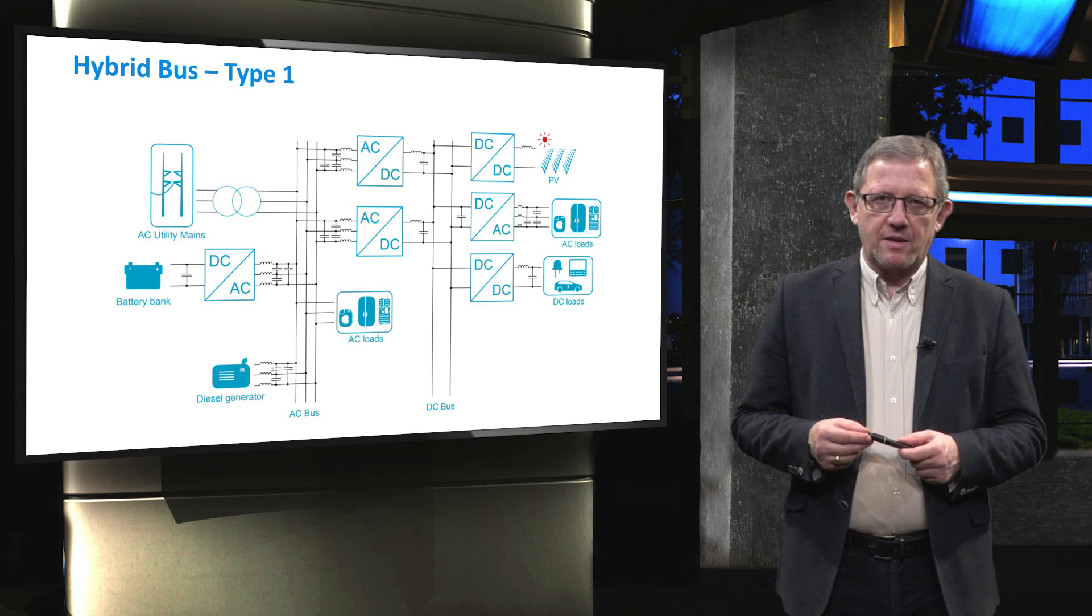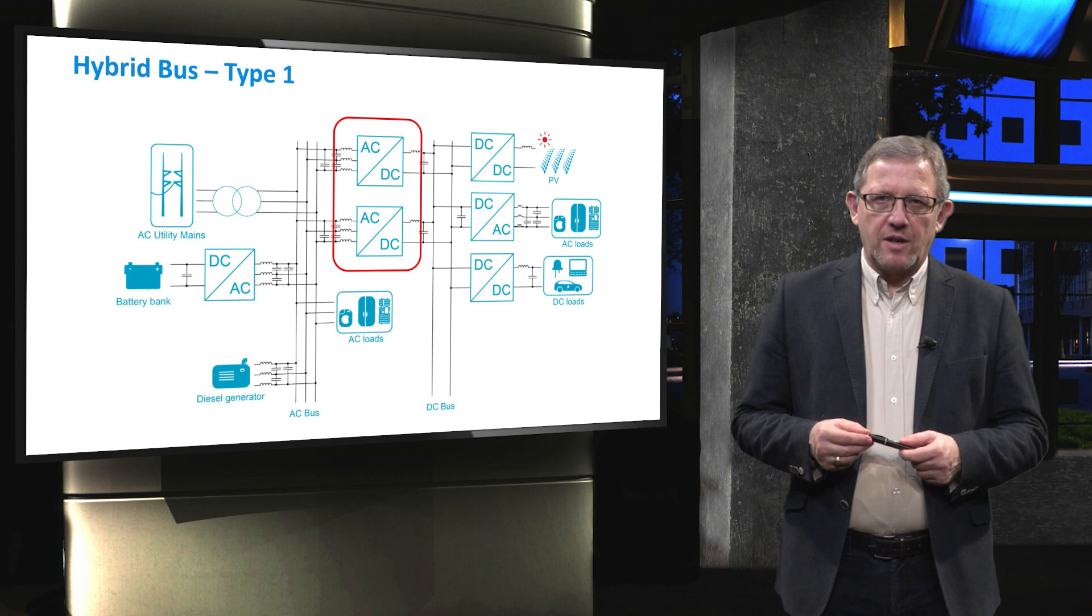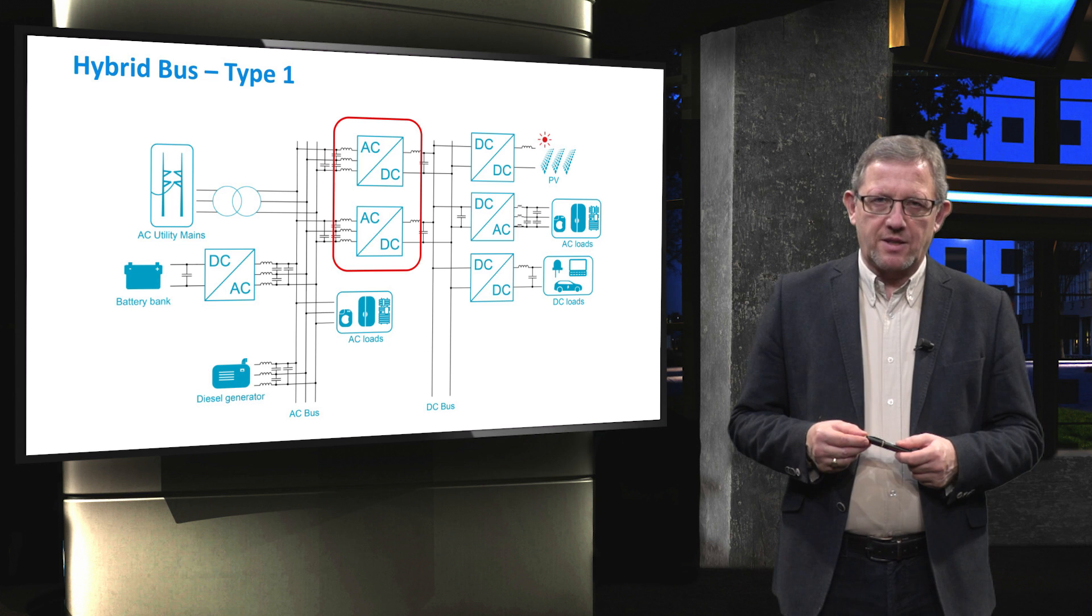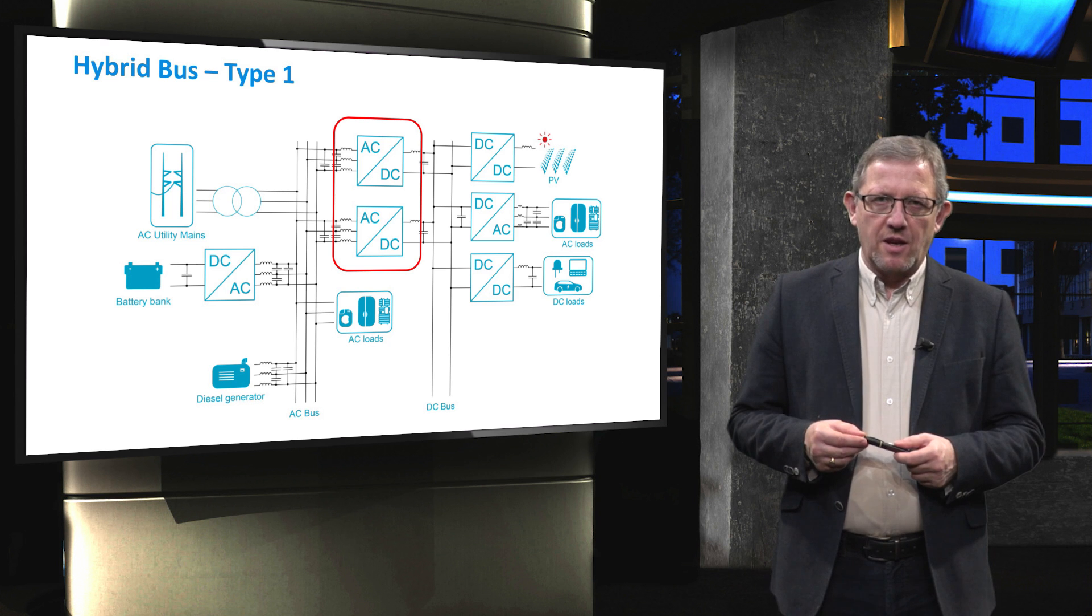The first type of hybrid bus is shown on the slide. The hybrid layout typically consists of one or more DC links connected to the AC ones. In the figure, two AC-DC converters are placed between DC and AC buses. This is mainly to achieve higher reliability in case one of them fails to properly operate and also to increase the power transfer capacity between AC and DC bus.